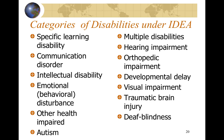IDEA encompasses categories of disabilities. One that stands out is traumatic brain injury, or TBI — something that can happen out of nowhere. I had a student who had been rolling along fine with no IEP, was in a car accident, sustained a TBI, and that then qualified him to receive an IEP to help with his learning outcomes.